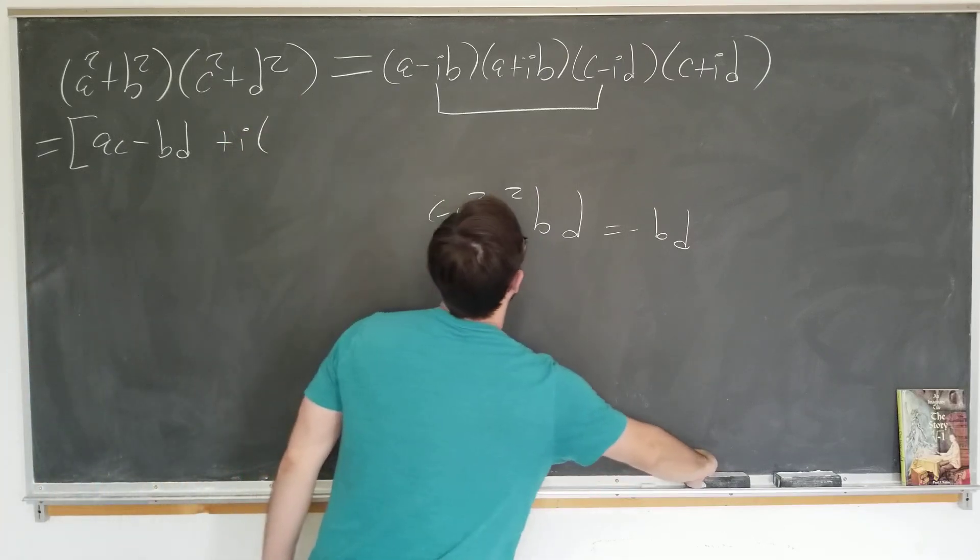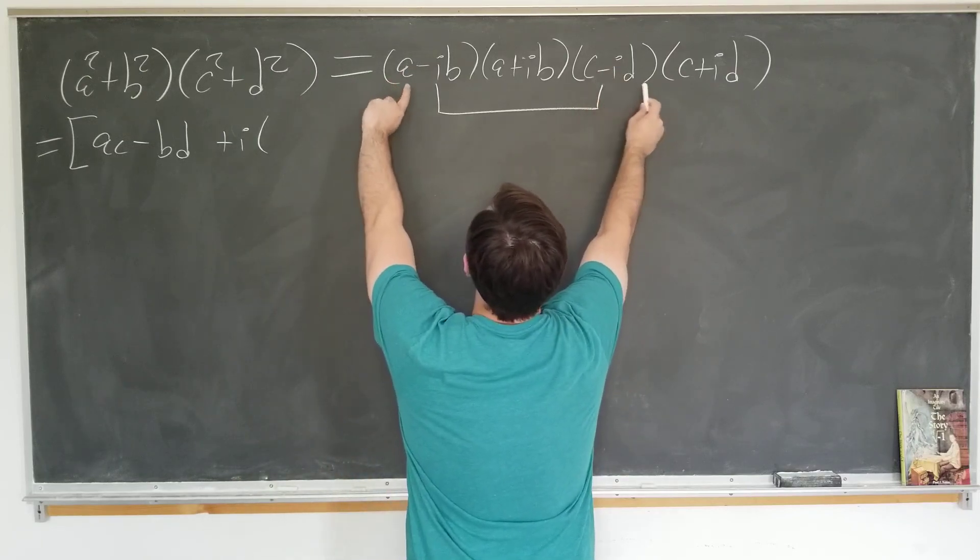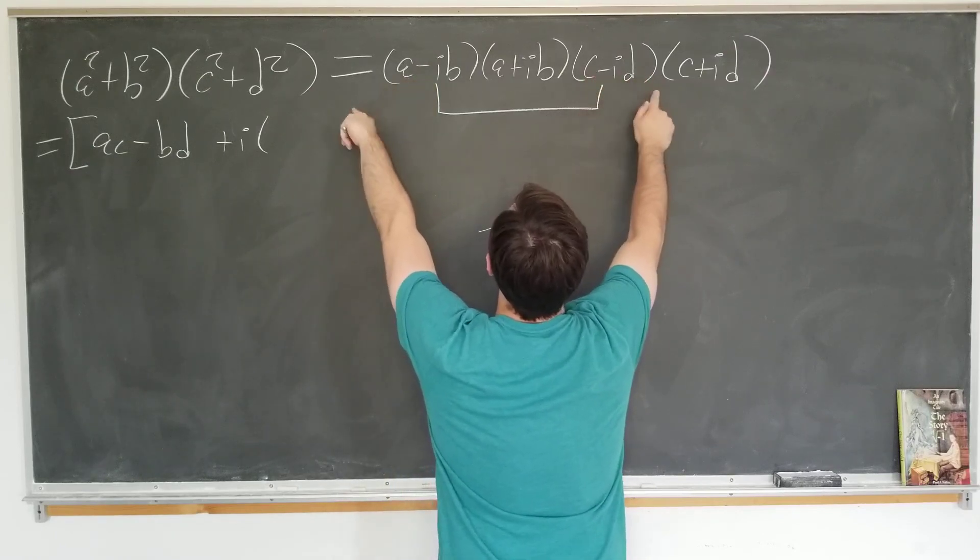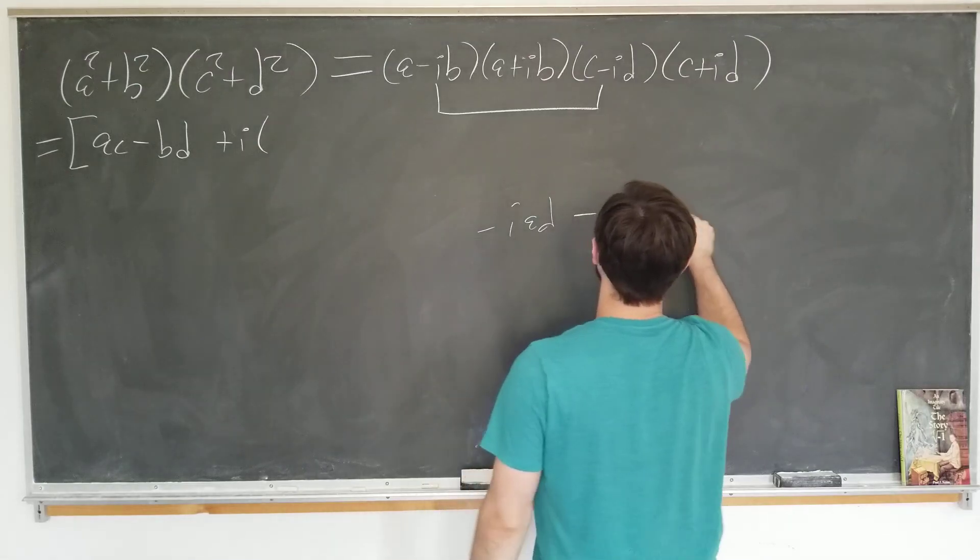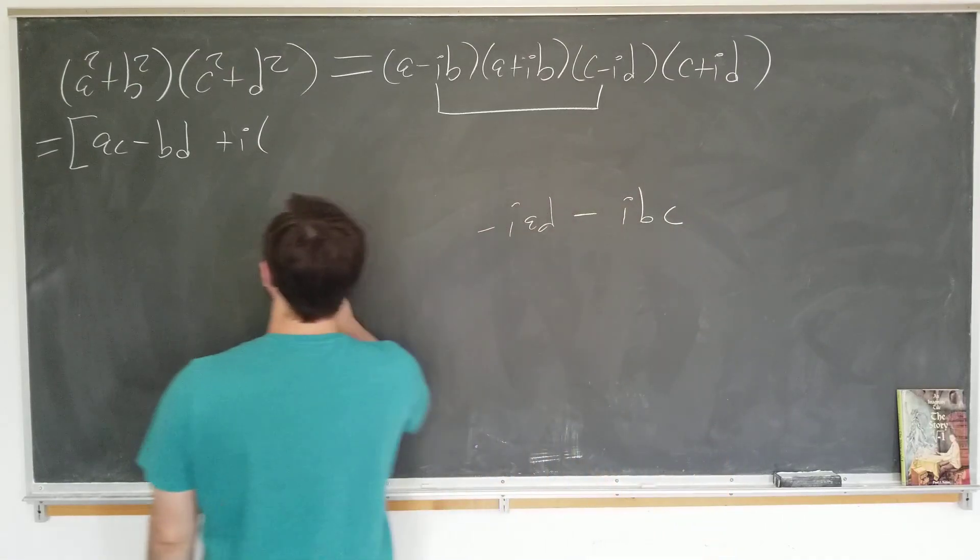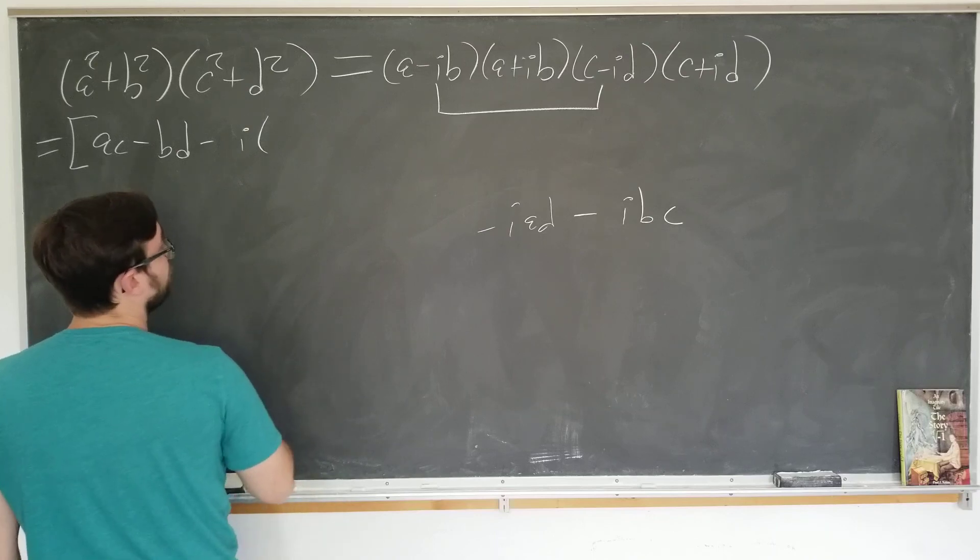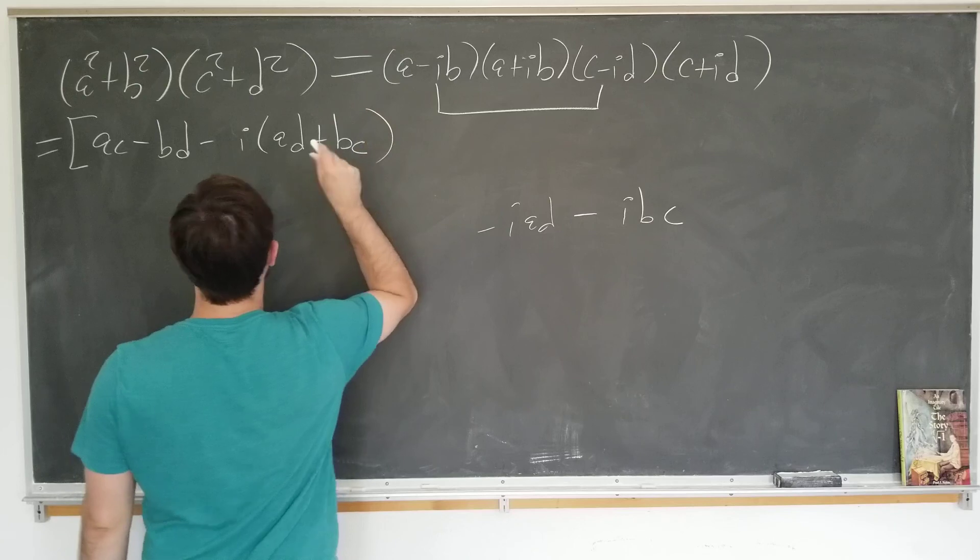And we have an i term here. What is the i term? We have minus iad. We also have minus ibc. So we're going to actually write it in this form. We have minus i times the sum of these, ad plus bc. Fantastic.